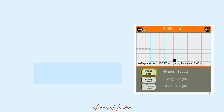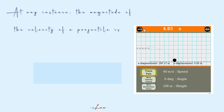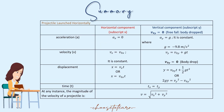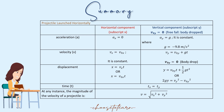At any instance, the magnitude of the velocity of a projectile combines the horizontal and vertical components using the resultant velocity formula. This is the summary for finding horizontal and vertical components of acceleration, velocity, displacement, and time.